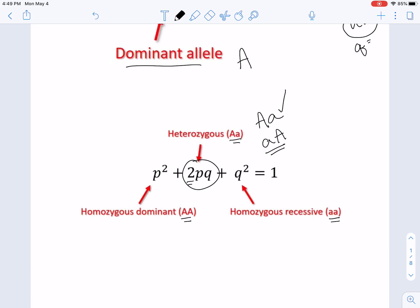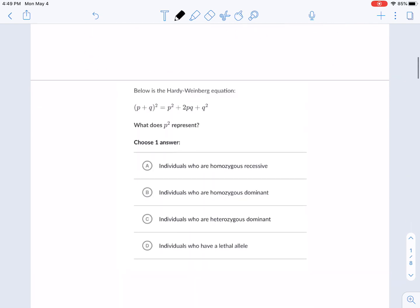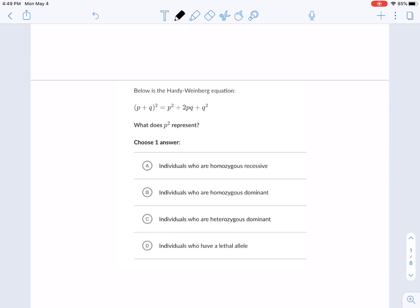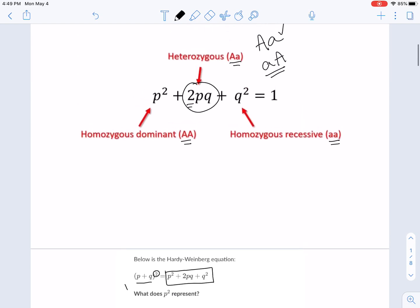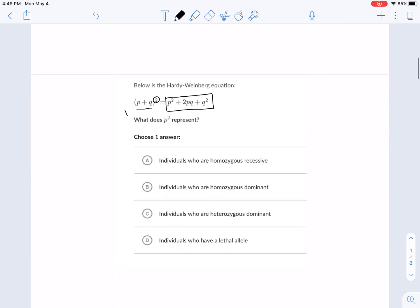So we're going to go ahead and dive into a few practice problems. The first one's just basically identification. You will have a couple of just identification questions on the exam, and then we'll get into some of the actual math. So here's the first one. Below is the Hardy Weinberg equation. So we know that P plus Q is equal to one. So it's just asking what does P squared represent? This is straight memorization. Homozygous dominant individuals. So individuals who are homozygous dominant.